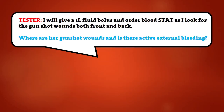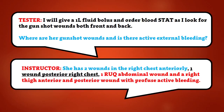I will give her a 1-liter fluid bolus and order blood stat as I look for the gunshot wounds both front and back. She has two wounds in the right chest anteriorly, one wound posterior right chest, one right upper quadrant abdominal wound, and a right thigh anterior and posterior wound with profuse active bleeding.